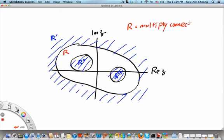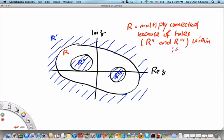It is said to be multiply connected because of holes, which are actually the regions R double prime and R triple prime, within it.